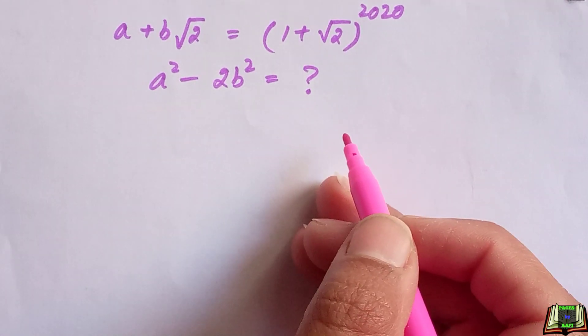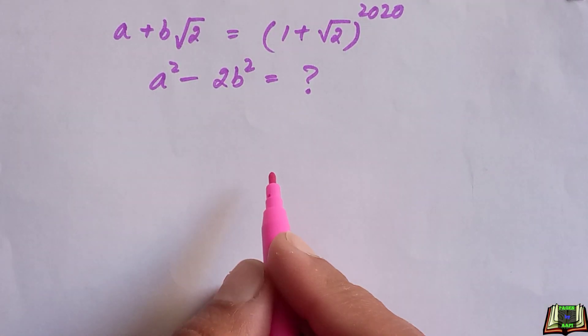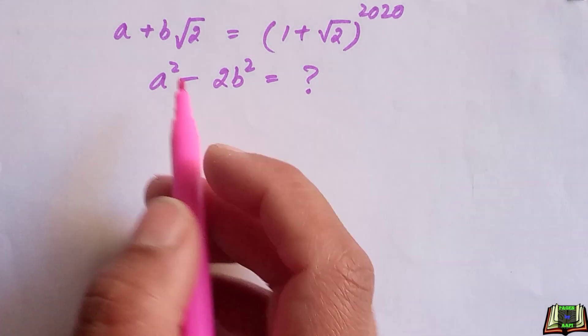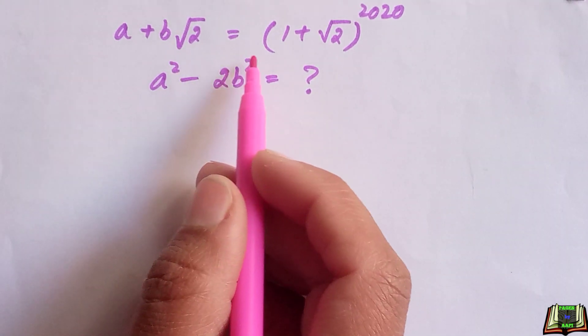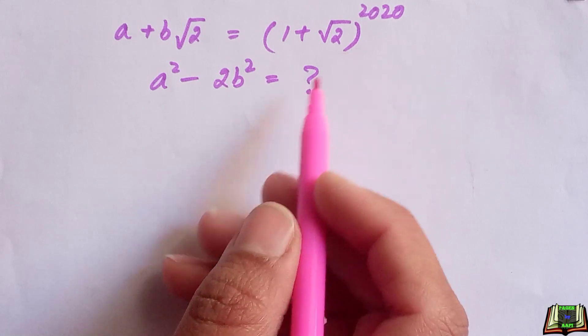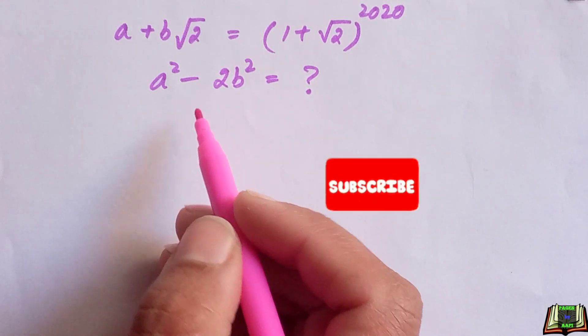Welcome back. Today we have this math Olympiad question: if a + b√2 = (1 + √2)^2020, we have to find the value of a² - 2b².